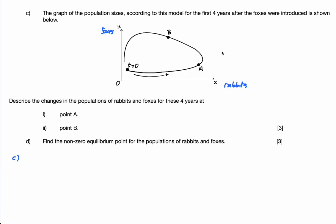For part C, we need to describe the changes in the populations at point A and at point B. At point A, is x increasing or decreasing? We're increasing in the x direction because we're going that way, and we're also increasing in the y direction. If you look at the tangent to the curve, x is increasing and y is increasing, so both populations are increasing.